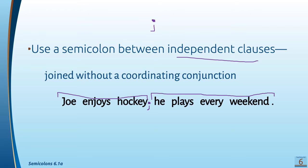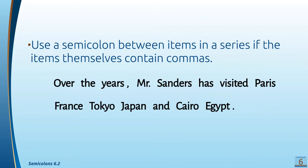There's no conjunction, so to join them into one sentence you need a semicolon. Pretty simple, right? It's stronger than a comma — much stronger than a comma — so it can be on its own without a conjunction. We also use a semicolon between items in a series if the items themselves contain a comma.